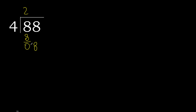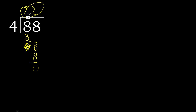Next, eliminate the 0 on this side. Now bring down 8. 4 multiplied by 2 is 8. 8 minus 8 is 0. And here there is no number, therefore we finish — 88 divided by 4 is 22.